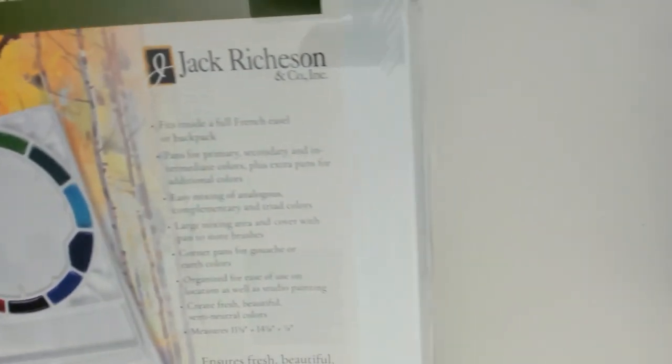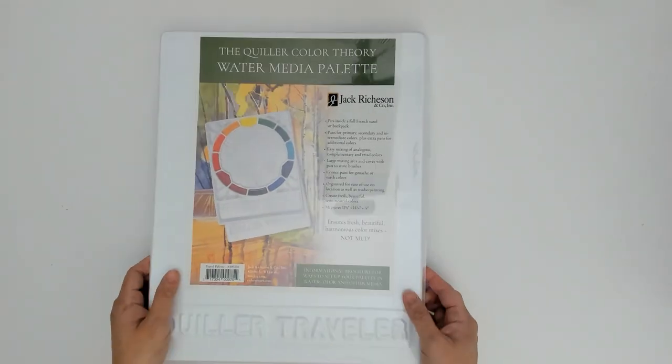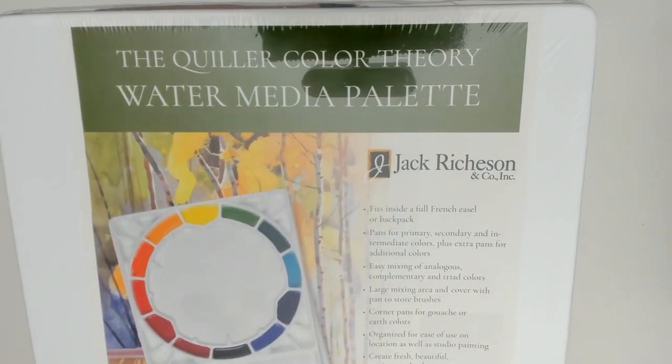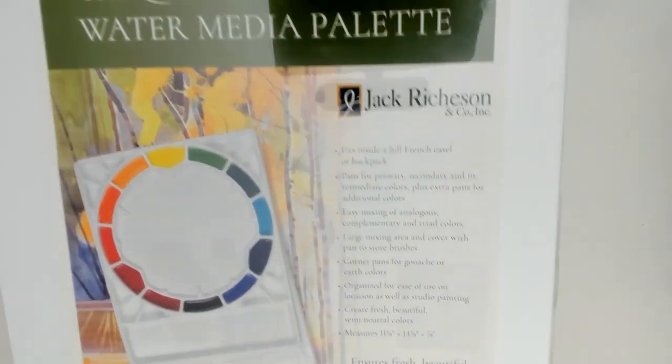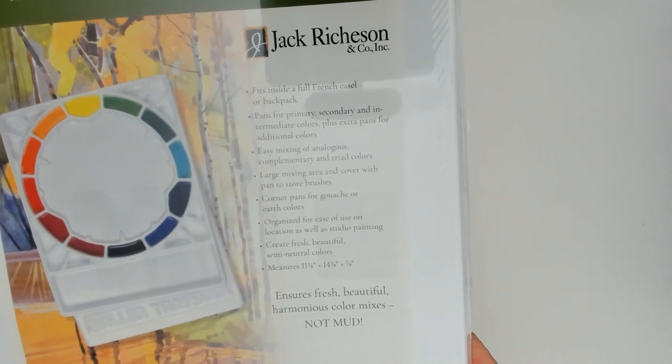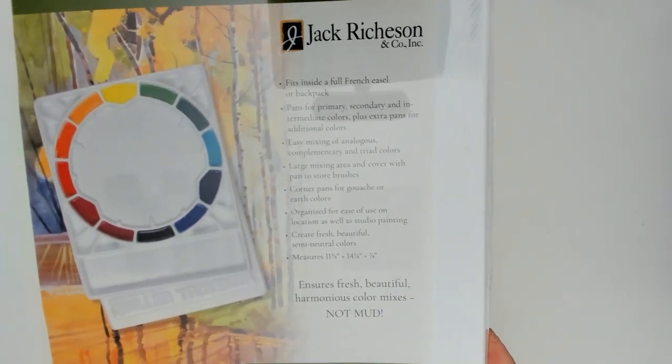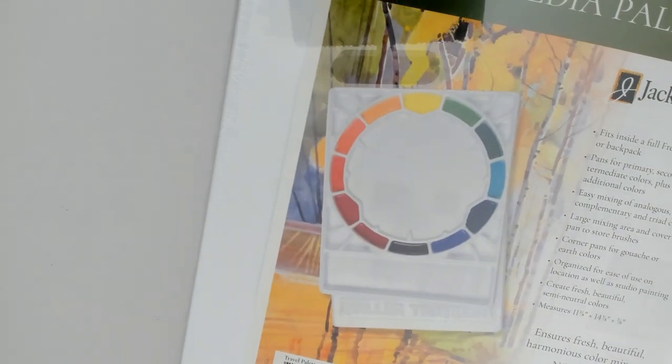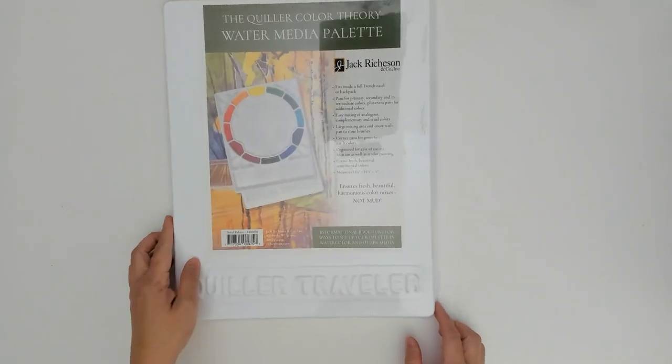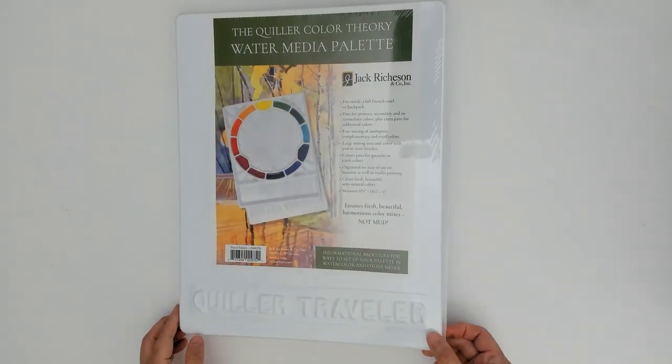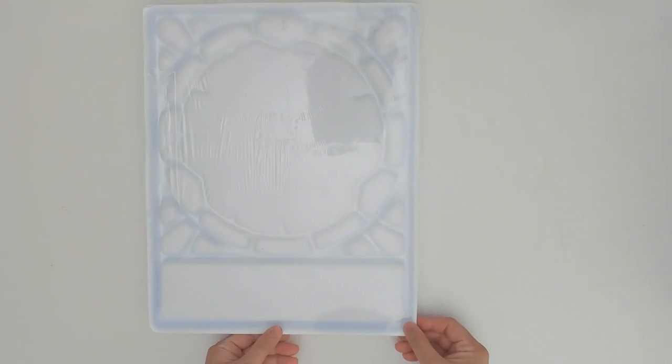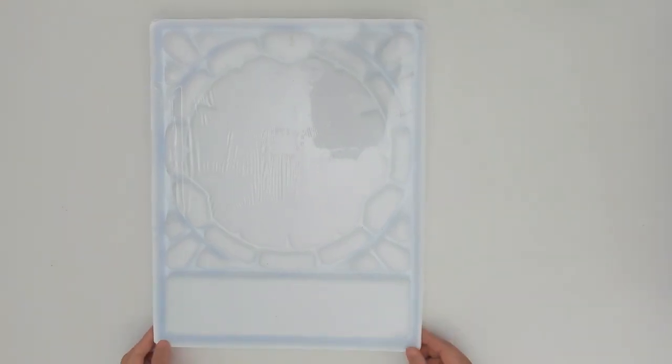I've been thinking about getting a new watercolor palette for a while now. One day I realized that I wanted to have a circular palette so I can arrange the paint colors in a color wheel. I looked and looked for a really good palette that had the exact number of wells that I needed. It took me a while but I was able to find this particular palette.